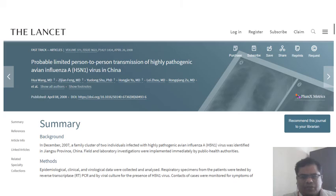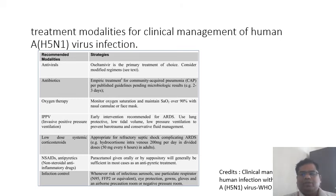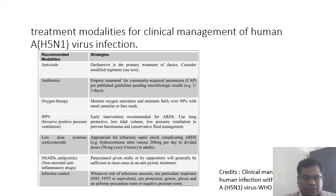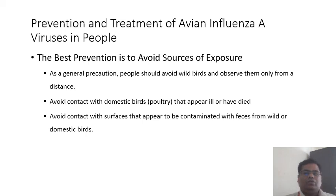There are documented cases of probable human-to-human transmission of H5N1 among close contacts. Treatment for H5N1 includes: oseltamivir as the drug of choice, antibiotics to prevent community-acquired pneumonia, oxygen therapy, invasive positive pressure ventilation to prevent ARDS using low tidal volume, low-dose systemic corticosteroids such as hydrocortisone 200 mg per day in divided doses, and antipyretics for fever.